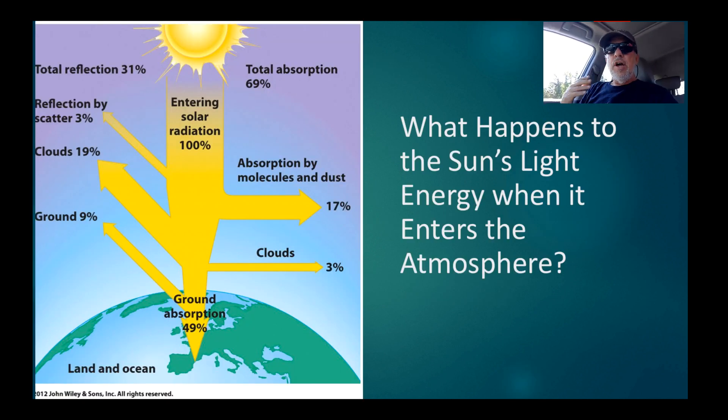Here's the first thing. This was a surprise to me when I first thought about it. What happens to the sun's light energy when it enters the atmosphere? Well, as you can see, only 69% of it gets absorbed and 31% of it gets reflected before it even gets to the surface of the Earth. Actually, 22% gets reflected before it reaches the surface, and then 9% is reflected by the ground.